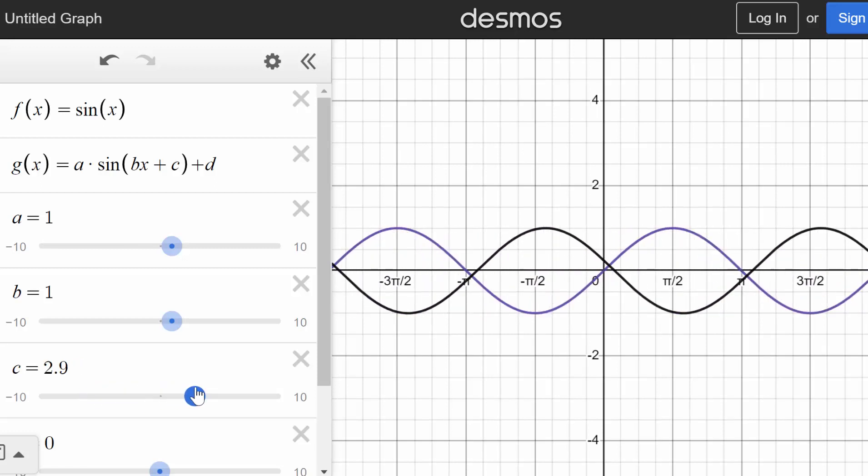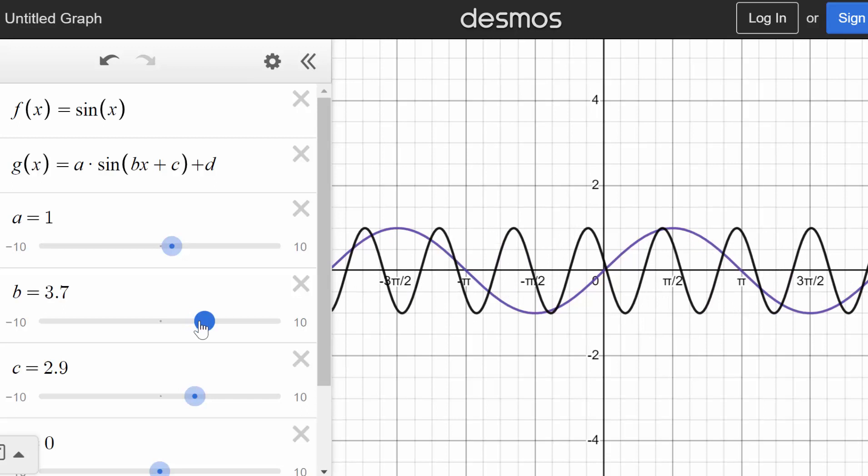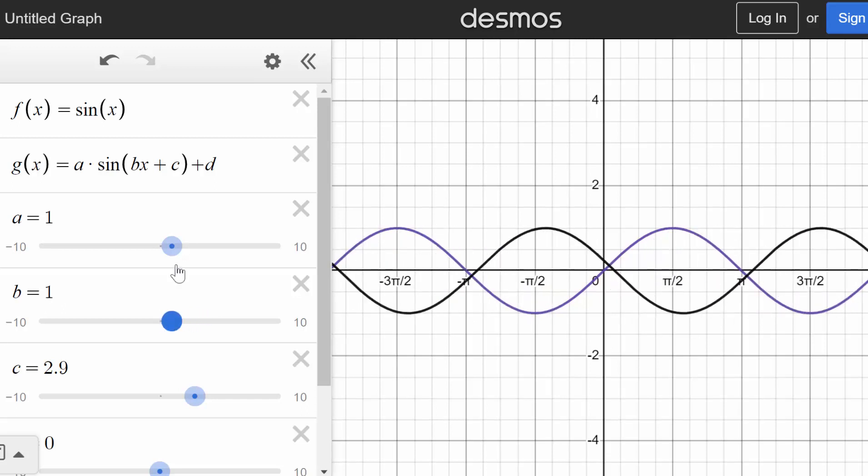And using negative values of c will actually move the function to the right. Though I do want to mention that this horizontal shifting is affected by the period, is affected by the b values. So we need to be a little bit careful when talking about this horizontal shifting, or in other words, when talking about what's known as the phase shift. And that phase shift has to do with both b and c.